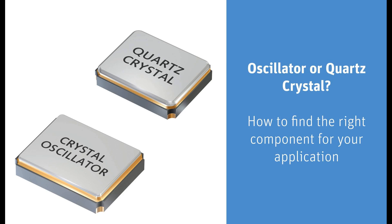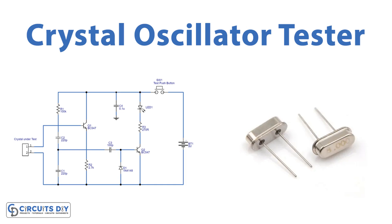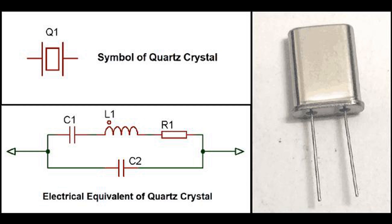Frequency control refers to the ability to adjust, regulate, or maintain the frequency of an oscillating signal within a desired range or with a specific precision. This process is essential in various electronic systems where precise timing or frequency stability is required. Frequency control involves adjusting the frequency through methods such as changing the properties of the oscillating circuit, modifying component characteristics, or applying external control signals. Frequency stability refers to the ability of a system or device to maintain a constant frequency despite changes in environmental conditions, component aging, or external disturbances.